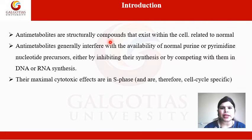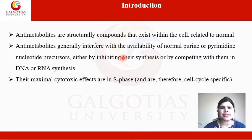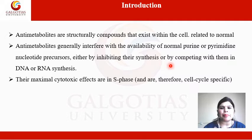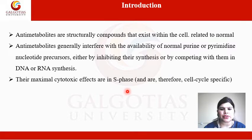Introduction: Antimetabolites are structural compounds that exist within the cell related to the normal bioprecursors. Antimetabolites generally interfere with the availability of normal purine or pyrimidine nucleotide precursors, either by inhibiting their synthesis or by competing with them in DNA or RNA synthesis. Their maximal cytotoxic effects are in the S phase, and these drugs are cell cycle specific. Many act on the S phase, that is the DNA replication phase.